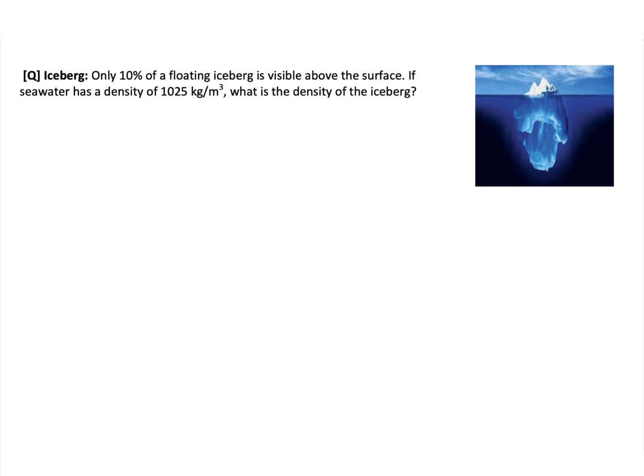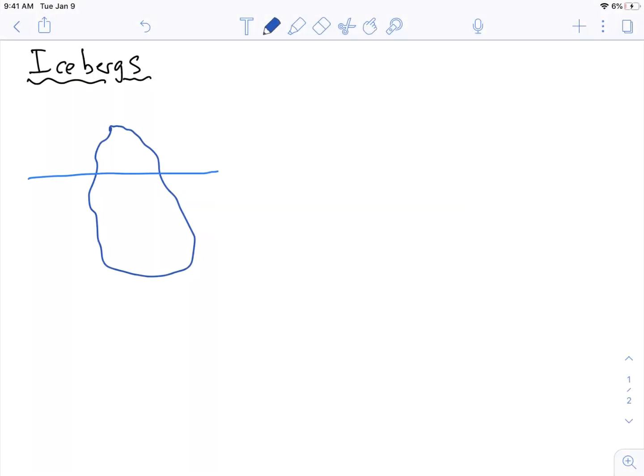And you have to figure out something about the densities of the fluid or the densities of the object. So in this case we're told that there's this iceberg that's floating in the water, 10% of the iceberg is above the water. Right, so we're told that 10% above the water and the other 90% is below, and we have to find the density of the iceberg.